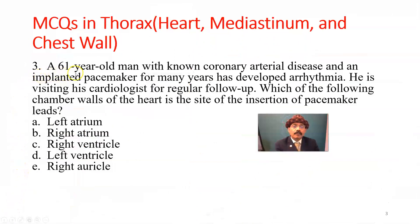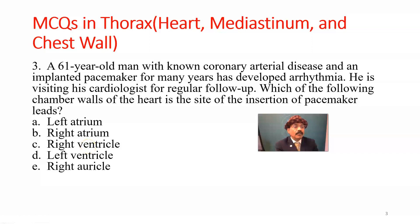Question number three: a 61-year-old man with known coronary arterial disease and an implanted pacemaker for many years has developed arrhythmia. Which chamber wall of the heart is the site of insertion of the pacemaker? Choices are: A) left atrium, B) right atrium, C) right ventricle, D) left ventricle, E) right auricle. Answer is C, right ventricle. The pacemaker leads are inserted into the trabeculae carneae of the right ventricle.